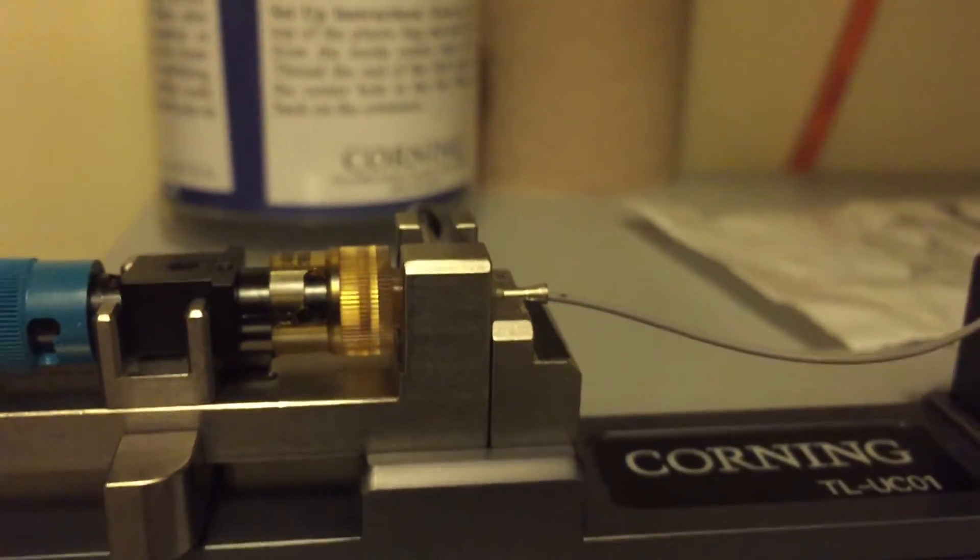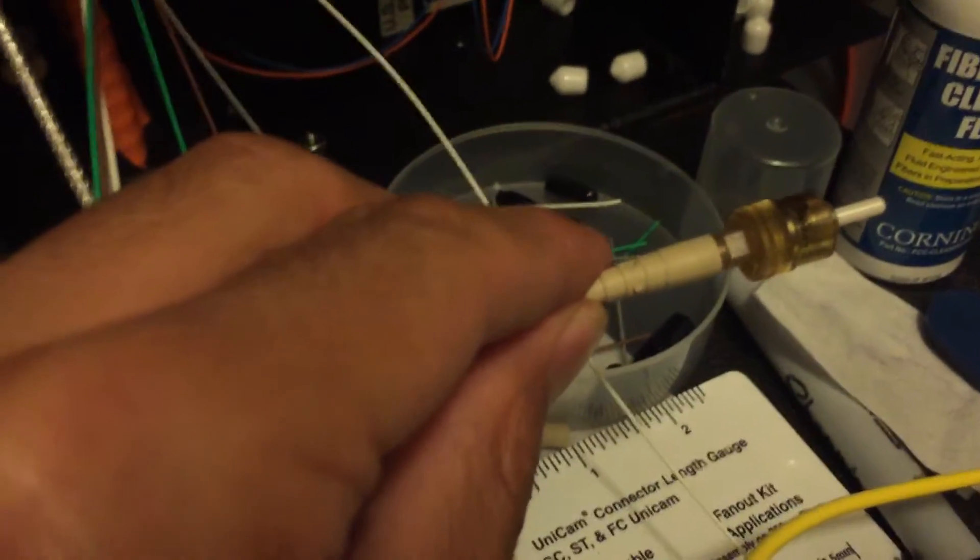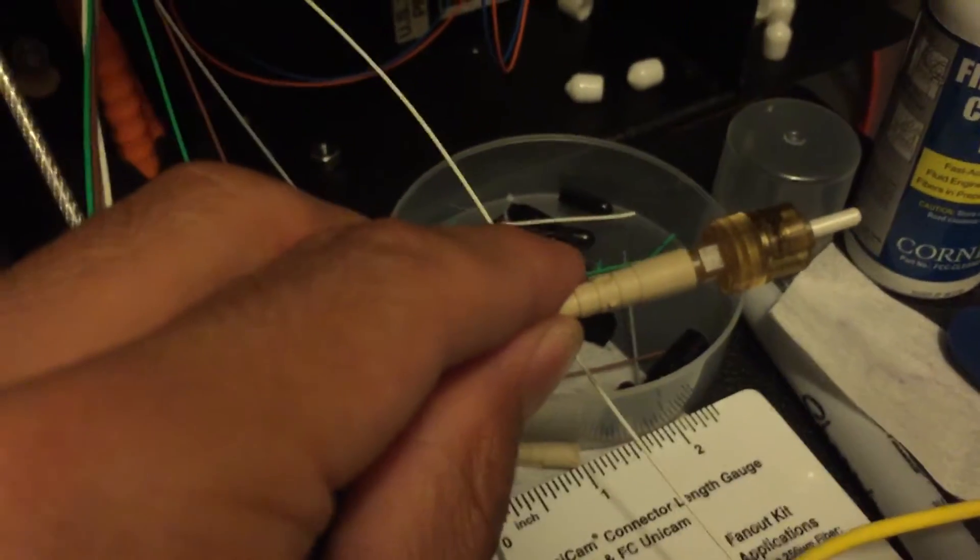Now I'm going to make the crimp. I successfully made the crimp and I put the shoe on which I remembered to put on earlier on the fiber which is critical, otherwise you can't use it.